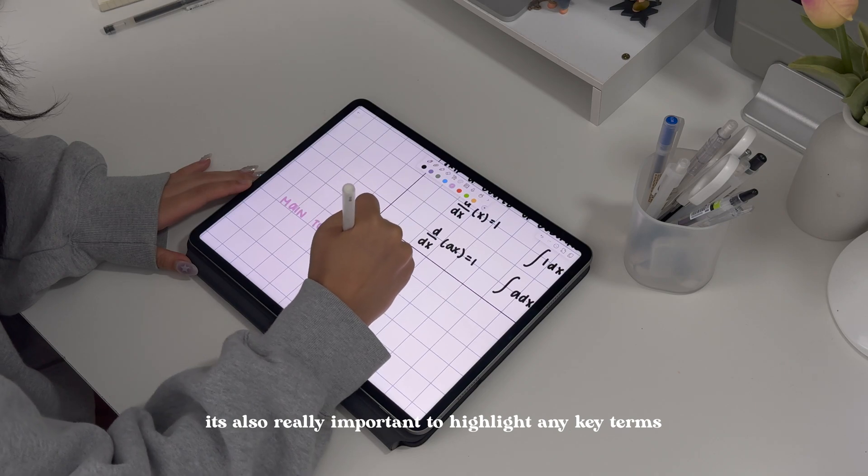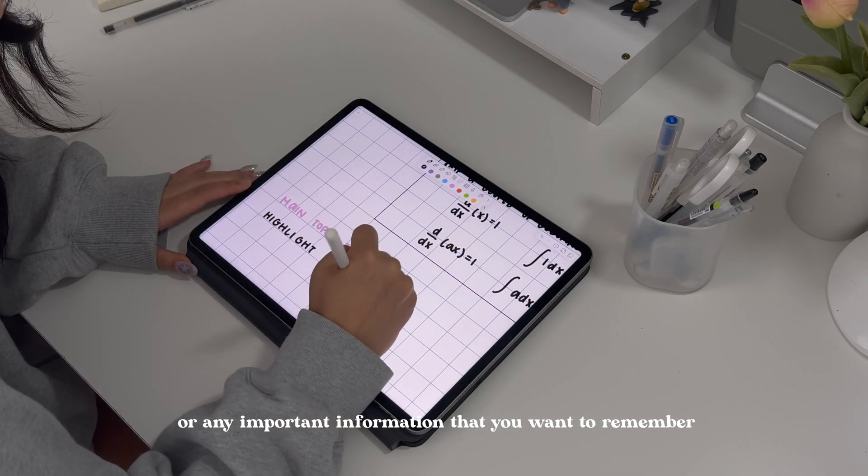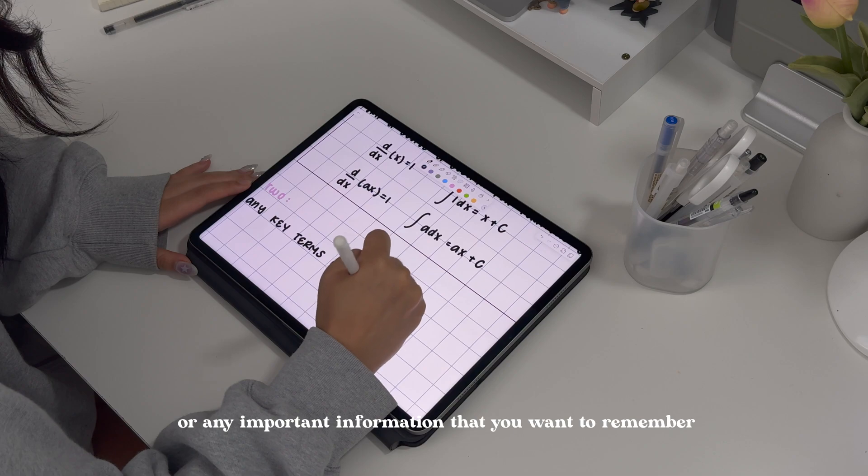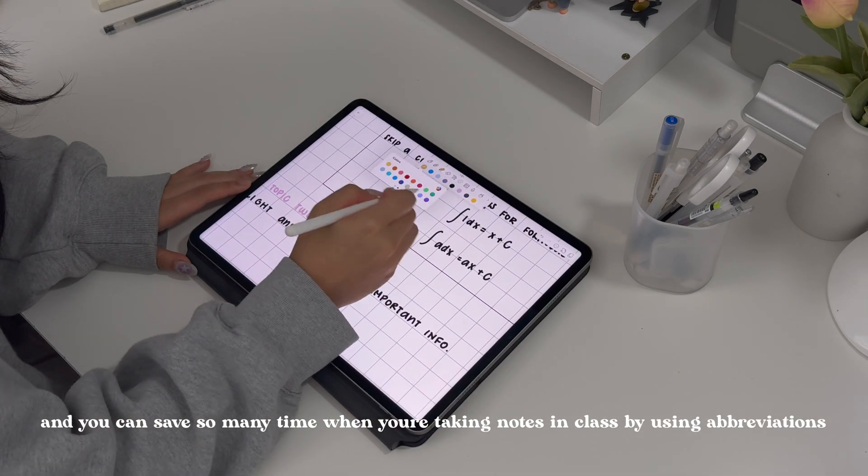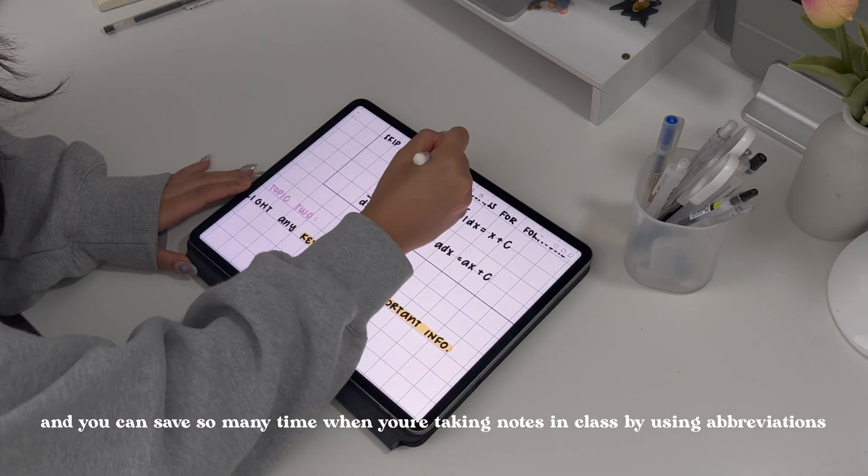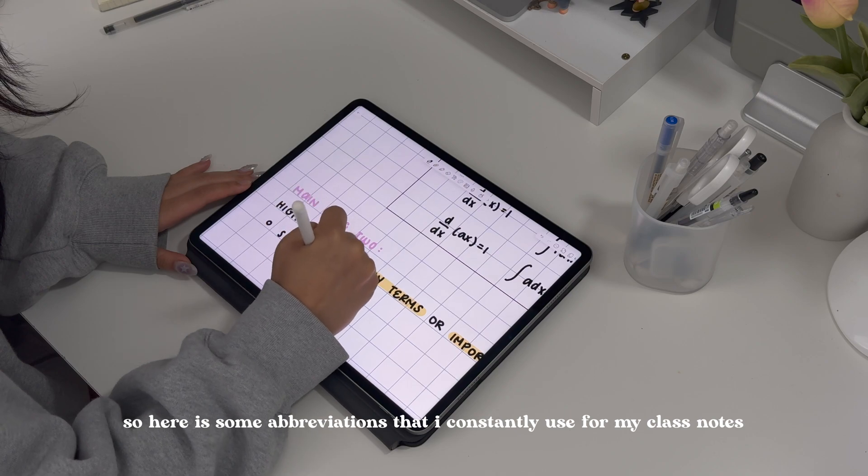It's also really important to highlight any key terms or any important information that you want to remember. You can save so much time when you're taking notes in class by using abbreviations. Here are just some abbreviations that I constantly use for my class notes.